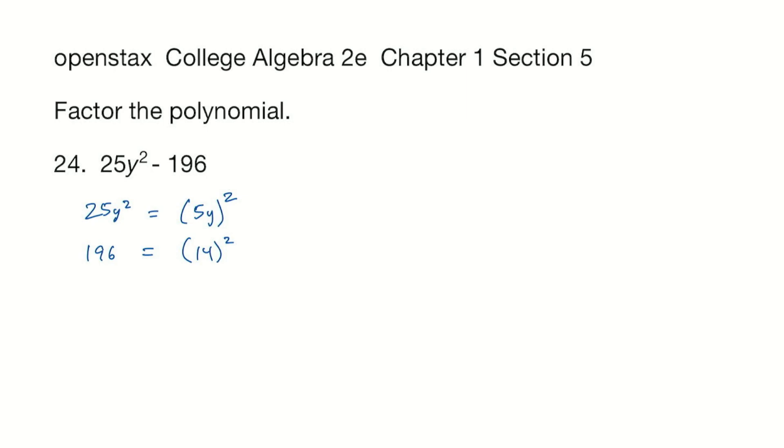We have a difference of squares here, so we can write the factored form. 25y squared minus 196 equals (5y + 14) times (5y - 14), and that is what we needed to find.